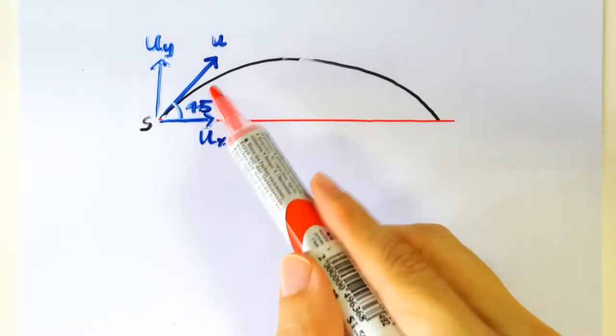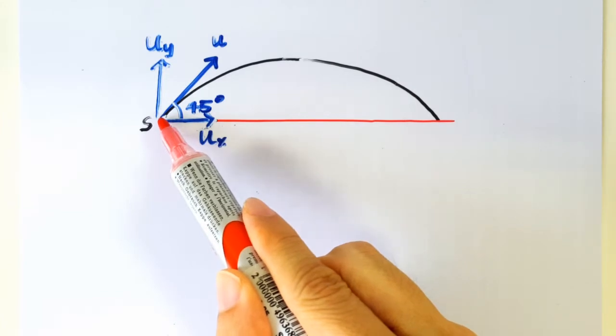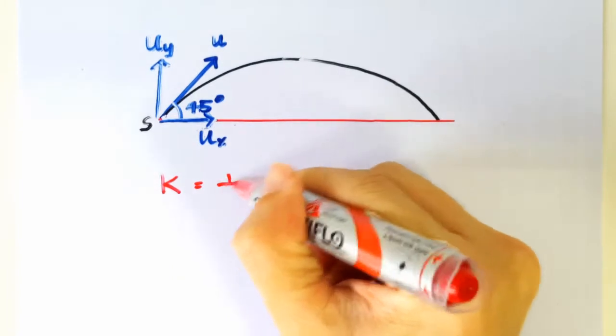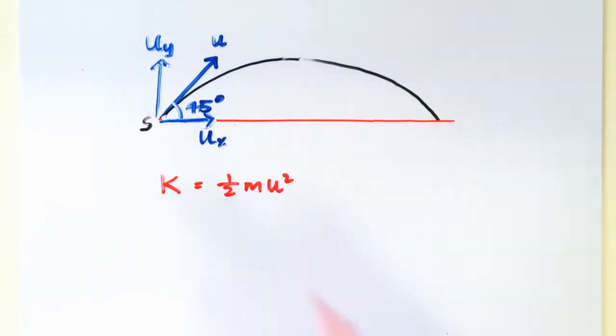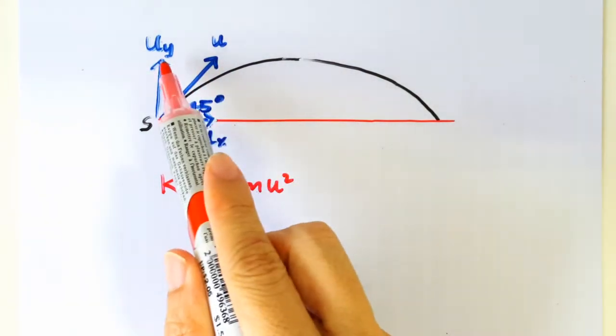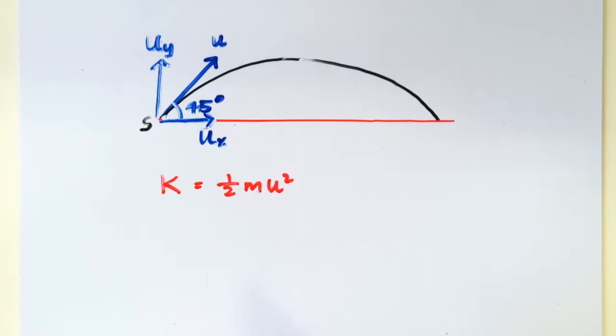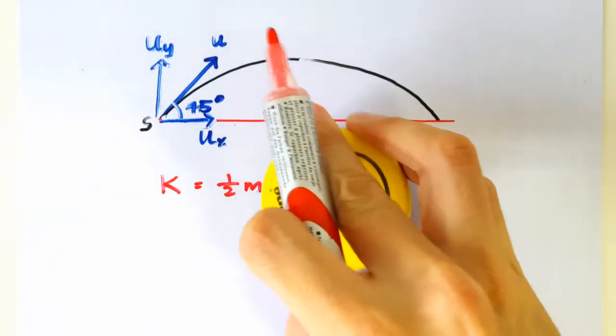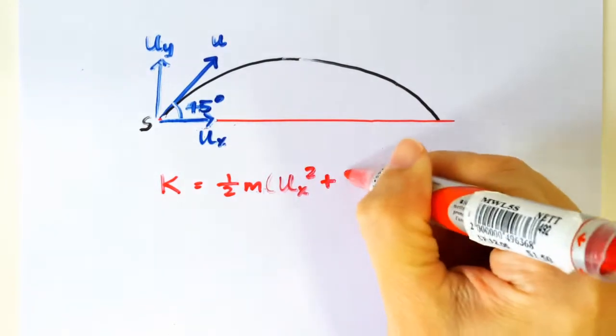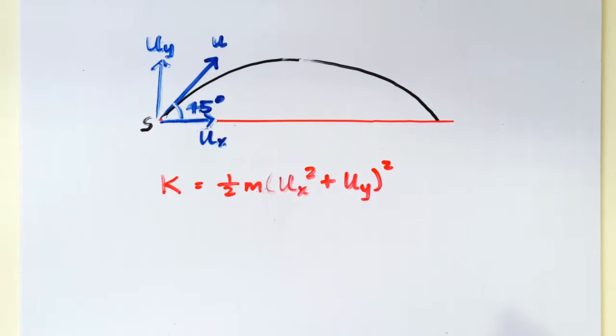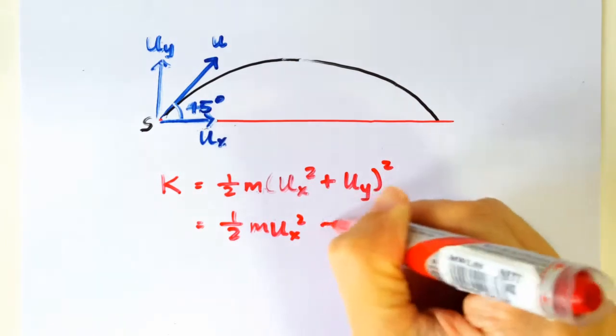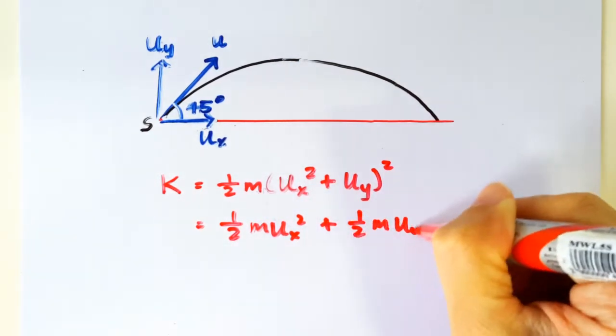We are told that the kinetic energy of the projectile when it was launched was K. So of course we can write K as half M U square. But U is of course the square root of Uy square plus Ux square. So I can always write U square as Ux square plus Uy square. Which means K is actually half M Ux square plus half M Uy square.